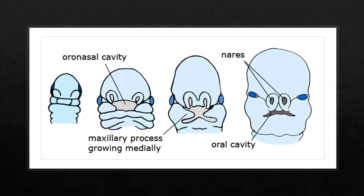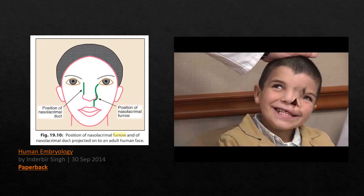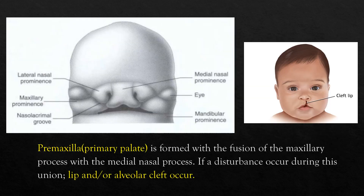The cephalic end curving down forms the frontal nasal process. The mandibular arch forming the lower lateral border of the stomodeum gives off a bud called the maxillary process. The lower part of the mandibular arch grows ventromedially and that part of the arch is now called the mandibular process. From the frontal nasal process, bilateral localized thickenings called nasal placodes appear. The nasal placodes will soon form the nasal pits. If a disturbance occurs during fusion, lip and/or alveolar cleft can occur.